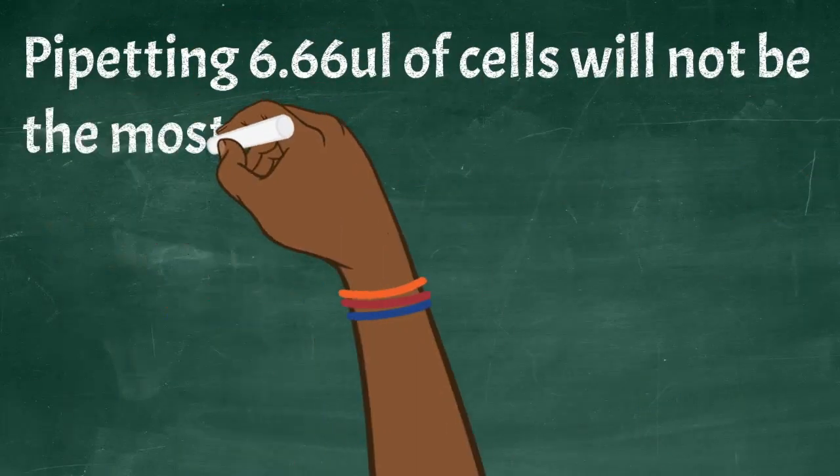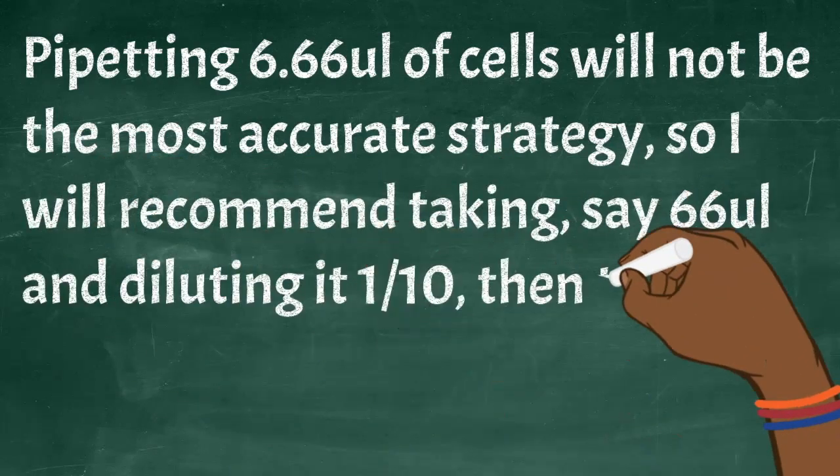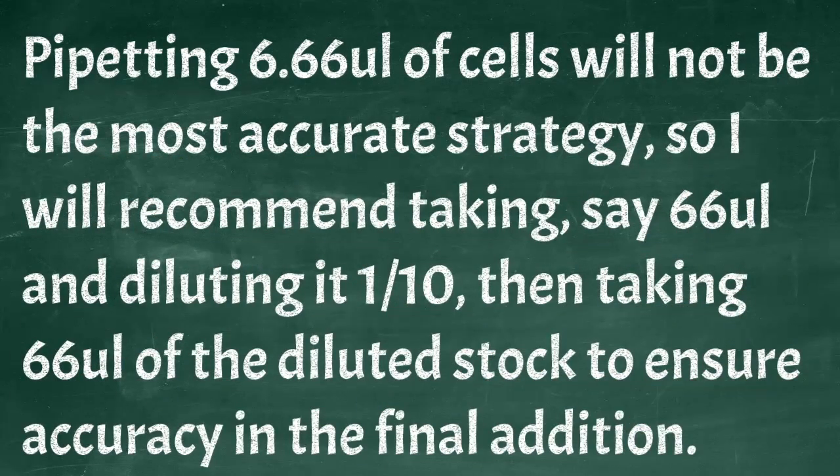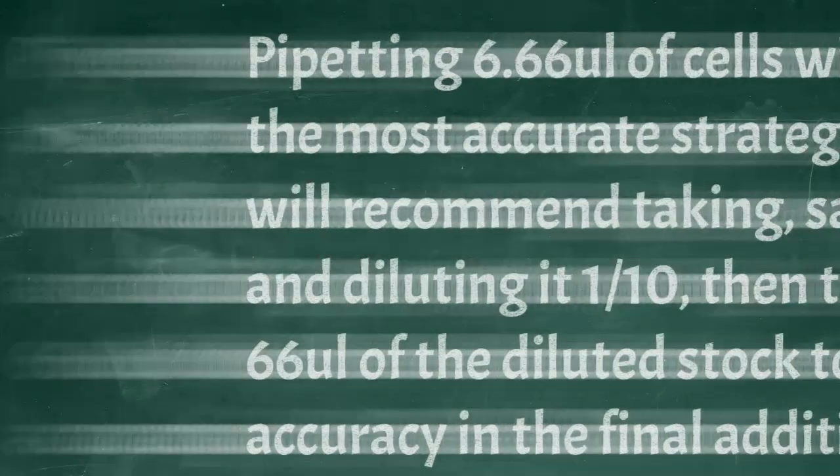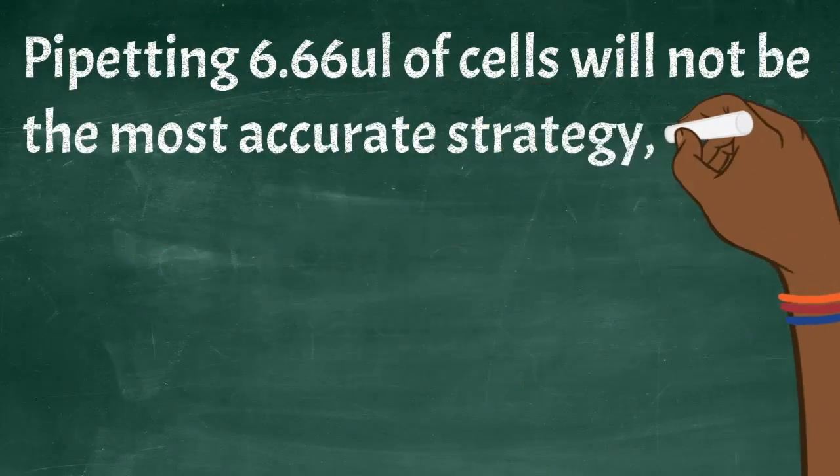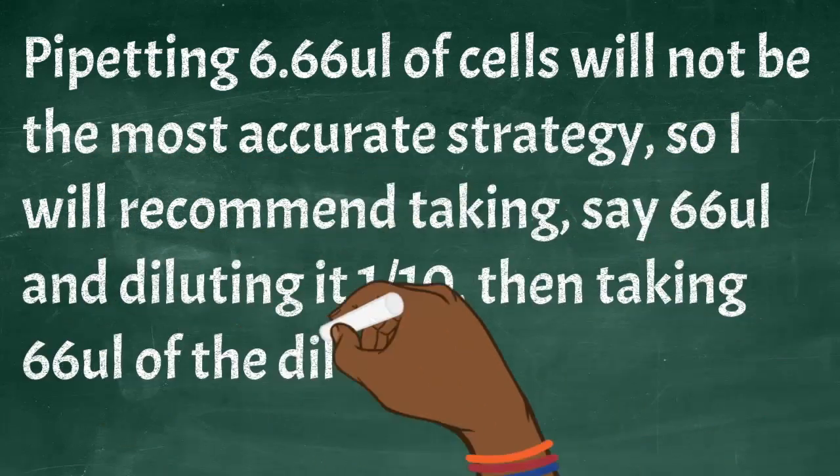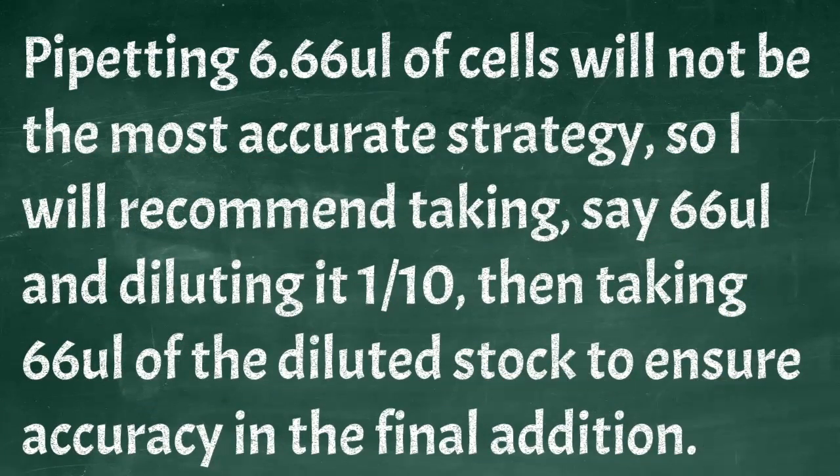In reality, pipetting 6.66 microliters of cells will not be the most accurate strategy, so I would recommend taking, say, 66 microliters and diluting it 1 in 10, then taking 66 microliters of the diluted stock to ensure accuracy in the final addition.